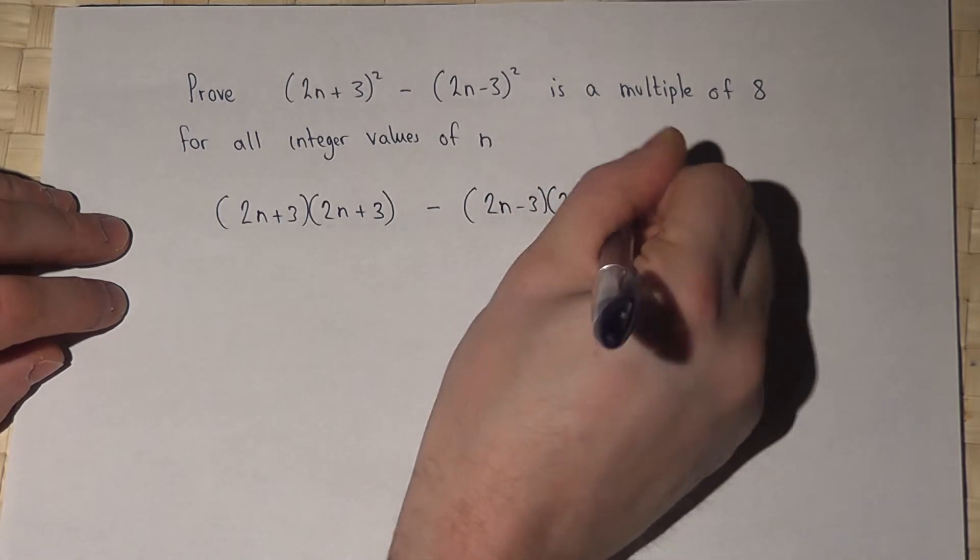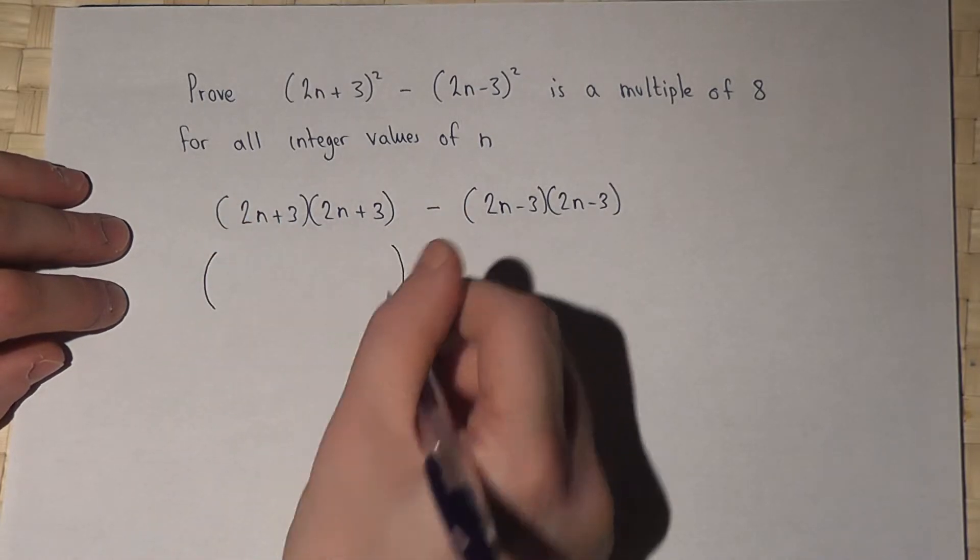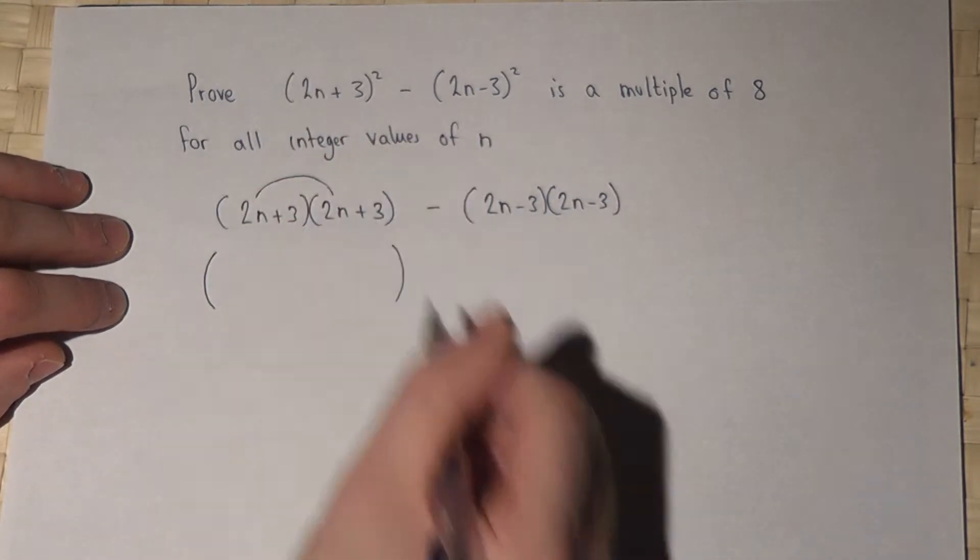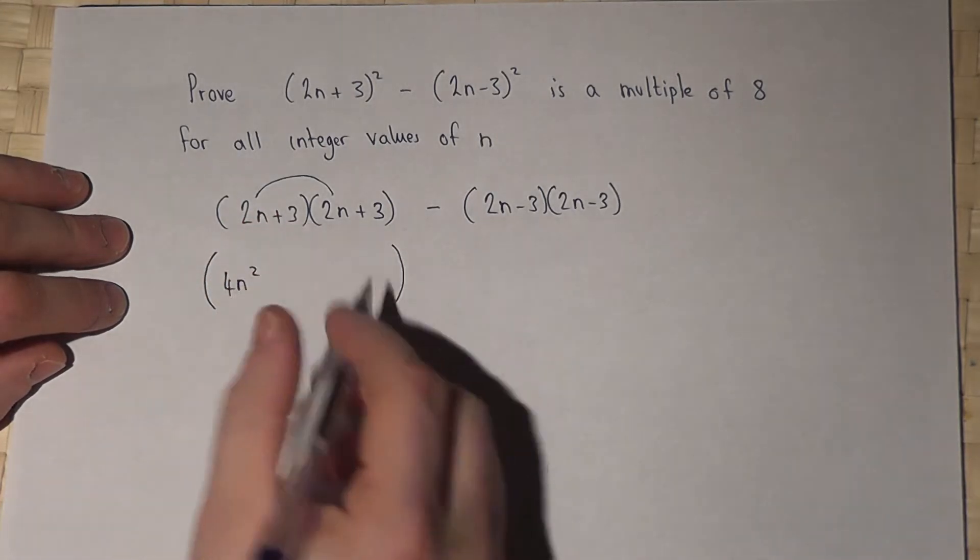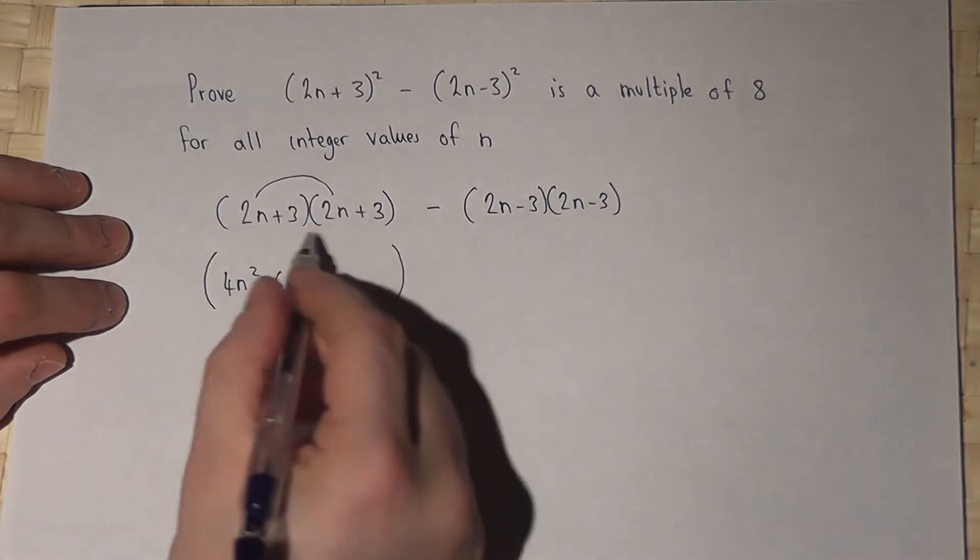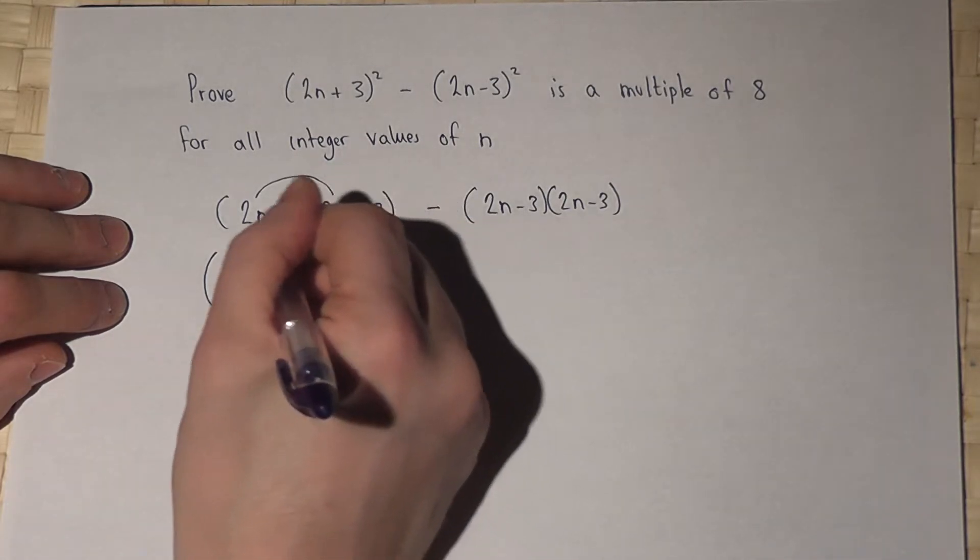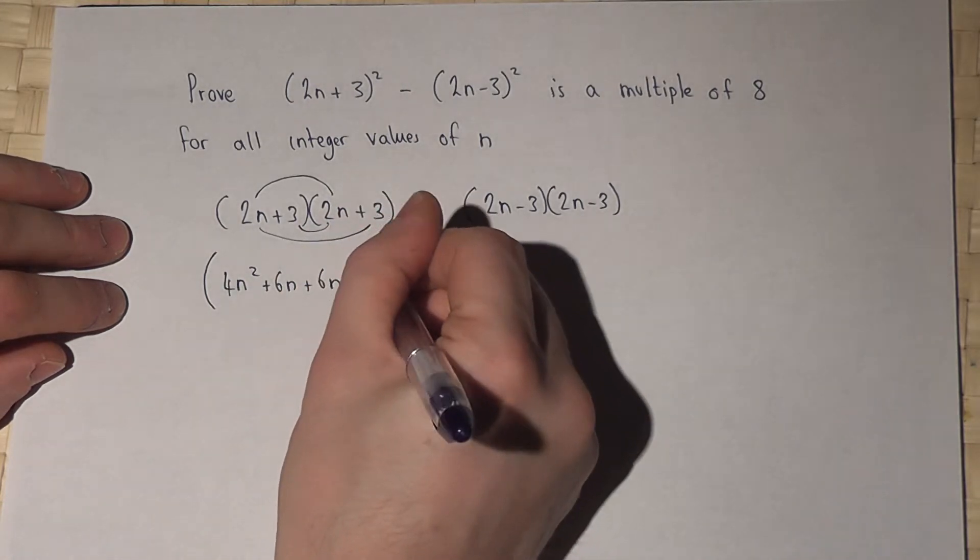Right then, so let's work out the first pair of brackets. 2n times 2n is 4n squared, 3 times 2n is 6n, 3 times 2n is another 6n, and 3 times 3 is 9.